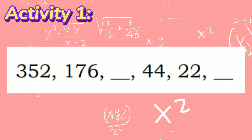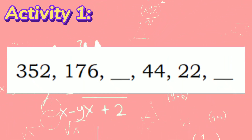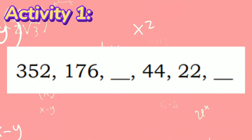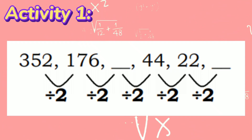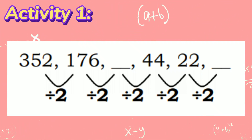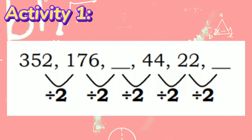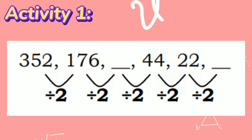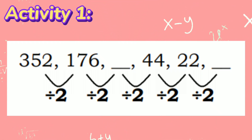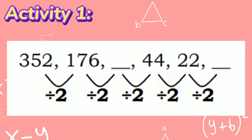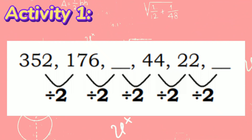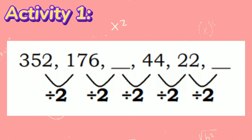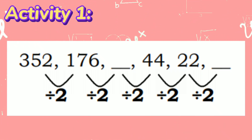Now, let us find the missing terms in the second given number sequence. Step 1: look for the pattern. As we can see, the terms are in decreasing order, so the mathematical operation is either subtraction or division. After a closer look, we can see that if we divide 352 by 2, the quotient is 176. As well as 44 divided by 2 gives 22 as the quotient. Therefore, we arrive at a pattern of dividing the terms by 2.